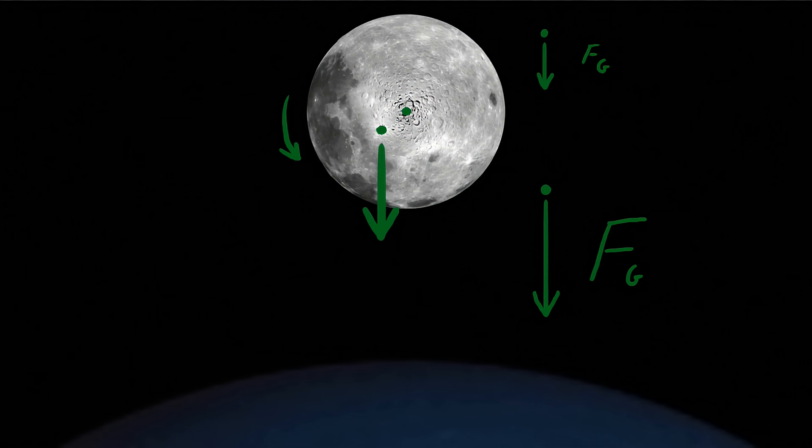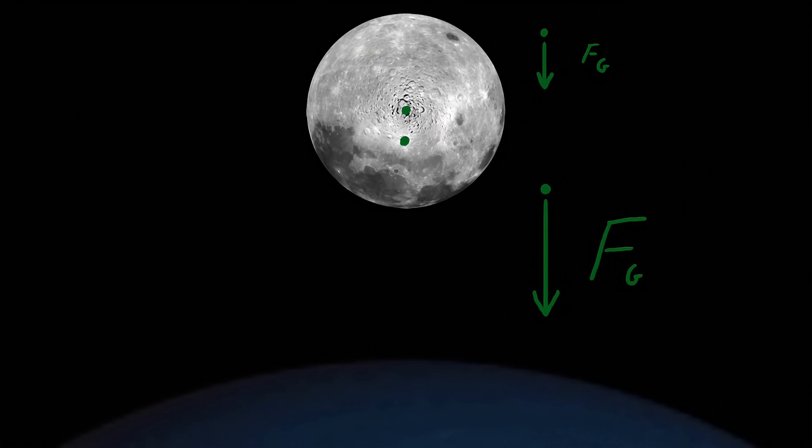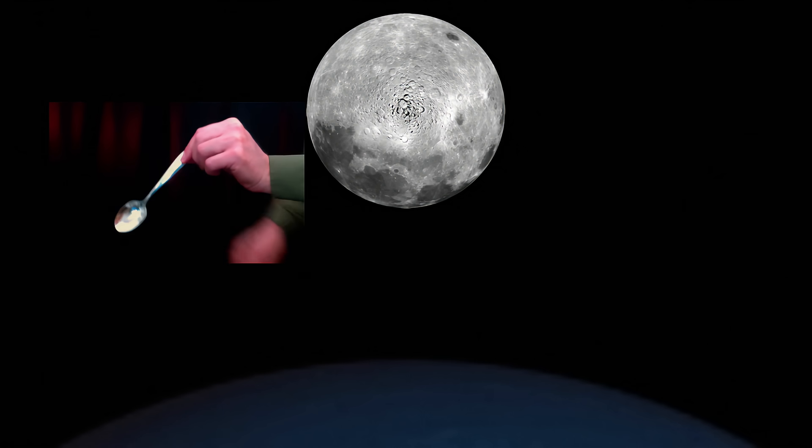The Earth would apply what we call a torque, which would align the moon right back to a position where the center of gravity is directly below the center of mass. Kind of like this.